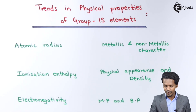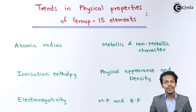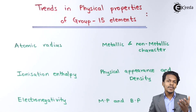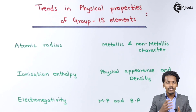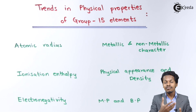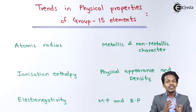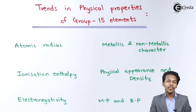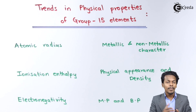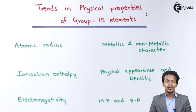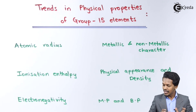Now let me talk about melting point and boiling point. The melting point of group 15 elements increases from nitrogen to arsenic, and then decreases from arsenic to bismuth. The boiling point, however, increases from nitrogen to bismuth, since bismuth has a metallic character and therefore a higher boiling point.